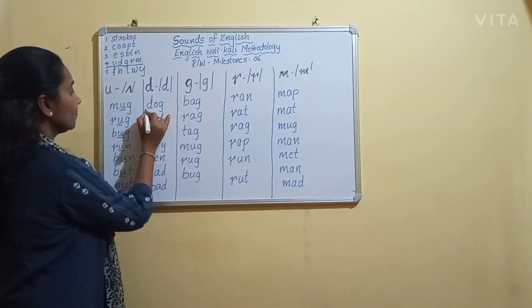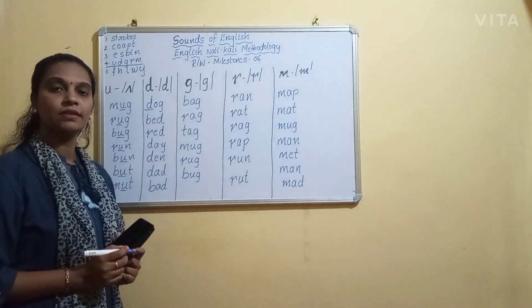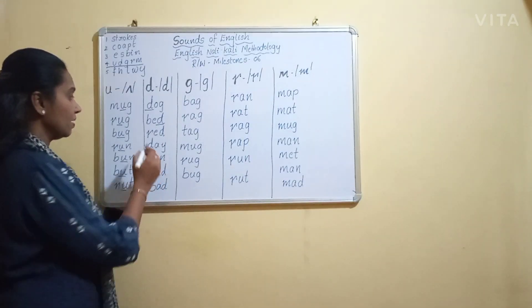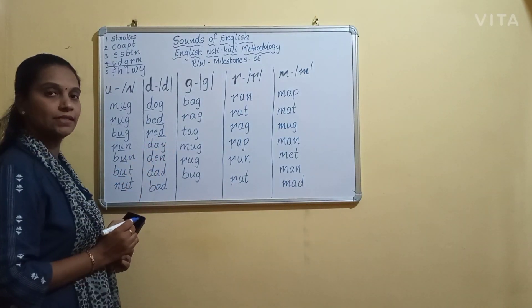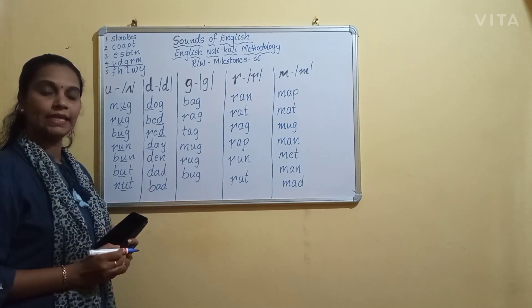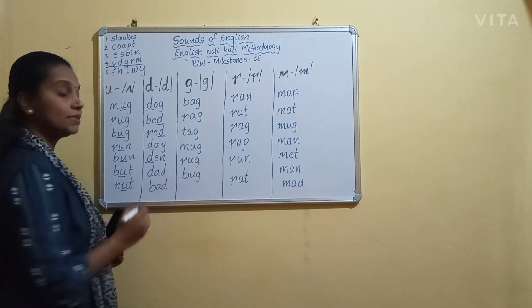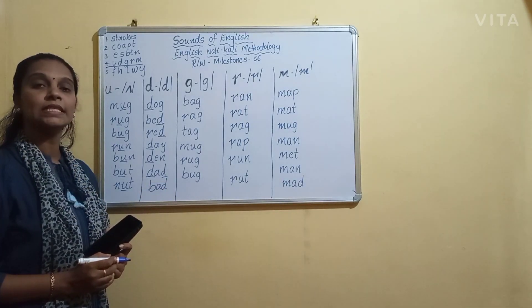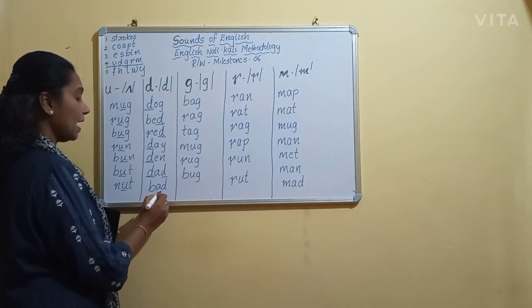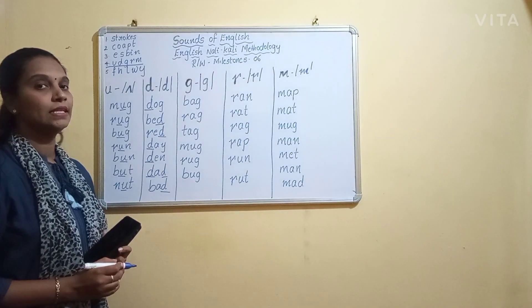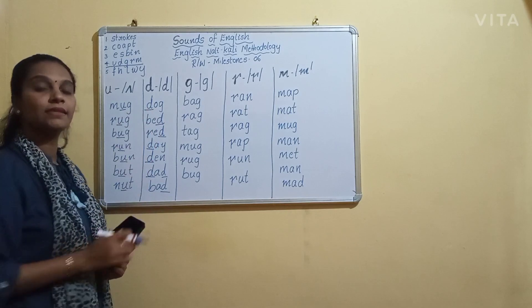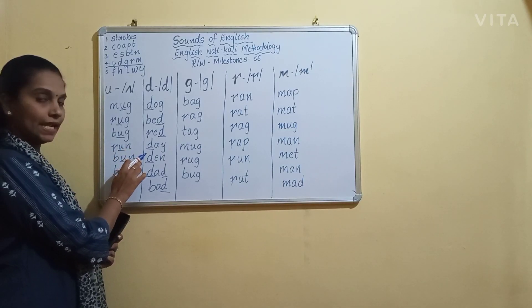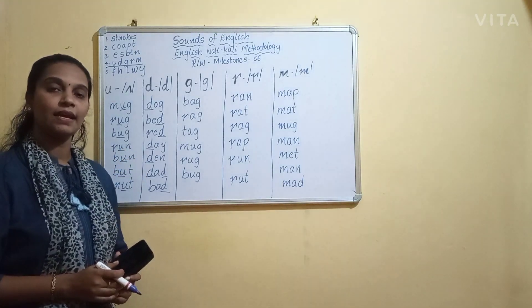Let us come up with the examples. D says D. Examples: dog, bed, red, day, den, dad, and dam.